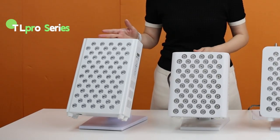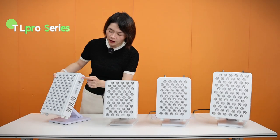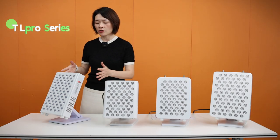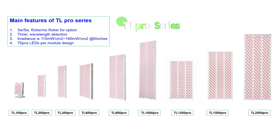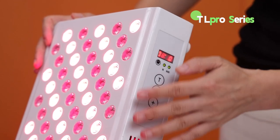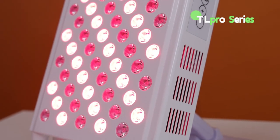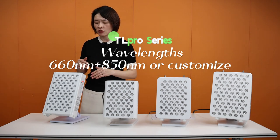The TL Pro series was released in 2020 — a very old but classic version from our company. The control interface is very simple: a digital screen with only four buttons. This model uses 70 LED chips. We have a few sizes available, from smaller to very large. It also supports cascade connection, so you can connect several units together. The wavelengths are 660 nanometers and 850 nanometers.